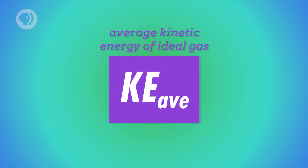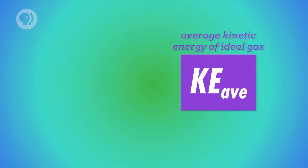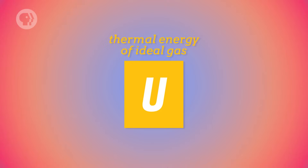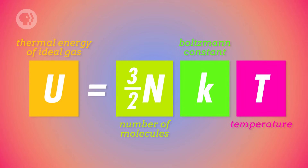And last time we learned that the equation for the average kinetic energy of an ideal gas was equal to 3/2 times k times the temperature. So the thermal energy of an ideal gas is equal to the number of molecules in the system multiplied by 3/2 times k times the temperature.